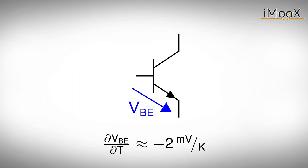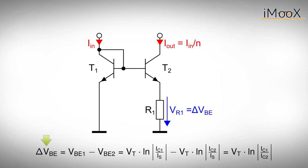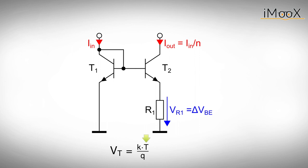To do so, we design a current mirror with a resistor R1 connected to one of the emitters. The voltage drop over R1 is the difference between VBE1 and VBE2. Expressing the base emitter voltages by the currents and calculating the difference yields delta VBE, the voltage drop at R1. Delta VBE is proportional to the temperature voltage and thus to the temperature itself.